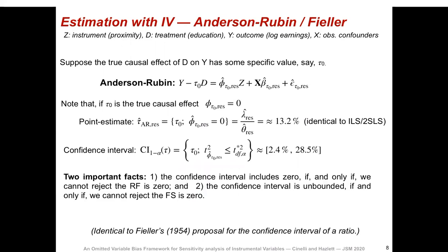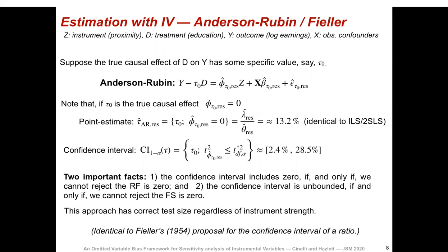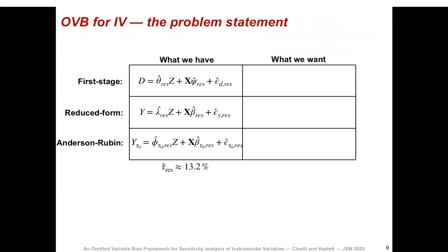For the confidence interval, we collect all values of tau-naught such that we do not reject the null hypothesis that the coefficient is equal to zero. This confidence interval has two important properties: it will include zero if and only if we cannot reject that the reduced form is zero, and it will be unbounded if and only if we cannot reject that the first stage is zero. This approach has correct size regardless of instrument strength. To sum up, here are all IV regressions we have: the first stage, reduced form, and the Anderson-Rubin regression that gives us the 13.2% estimate.